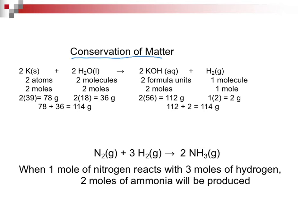We talked about conservation of matter in chapter two. Here we show the two reactants, potassium and water. If we crunch our numbers, there'll be 114 grams. We show our two products, potassium hydroxide and hydrogen. If we crunch our numbers, there will again be 114 grams.